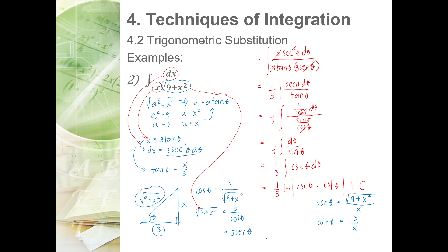Combining since they share the same denominator x, the final answer for example two is one-third times ln of the square root of 9 plus x squared minus 3, all over x, plus C.